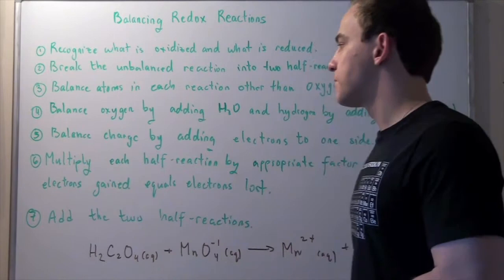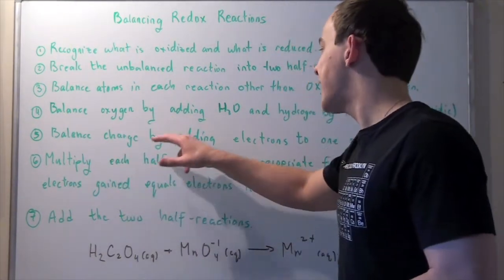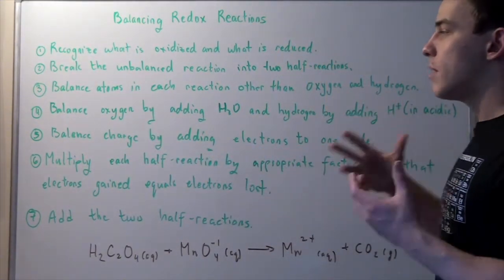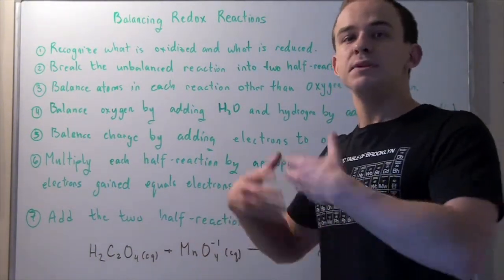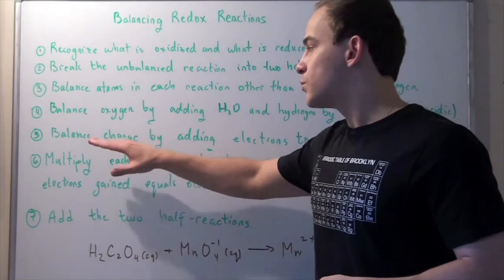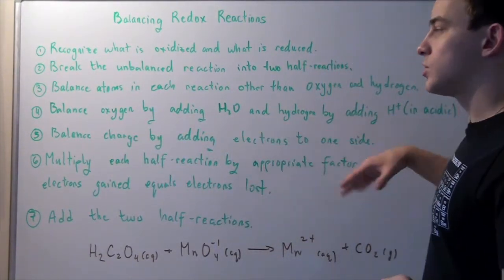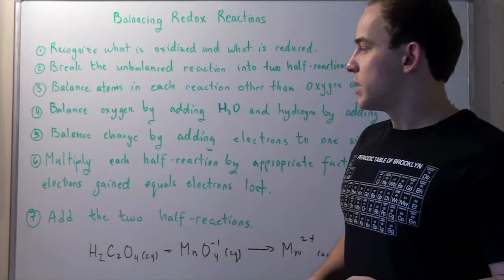In the fifth step, you balance the charge by adding electrons to one side. Remember, charge is conserved. So whatever charge is lost must be gained. That's why you need to balance the charge by adding electrons to one side of the reaction.